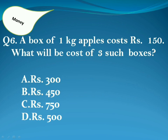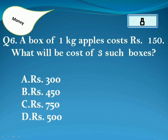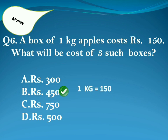A box of 1 kg apples costs 150 rupees. What will be the cost of 3 such boxes? Answer is Option B. Because 1 kg is for 150 and 3 kg is equal to 3 multiplied by 150, which is equal to 450.